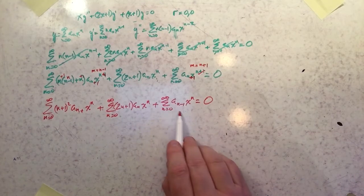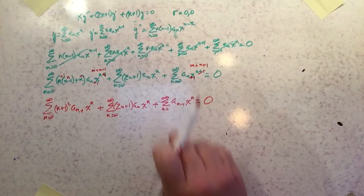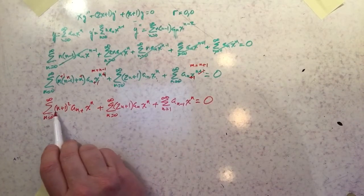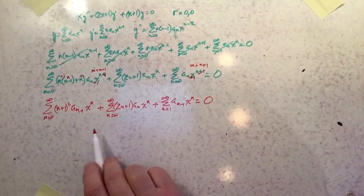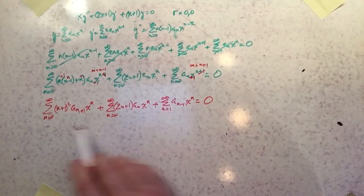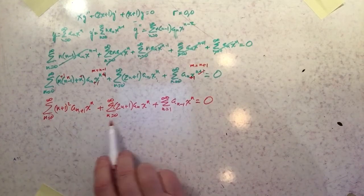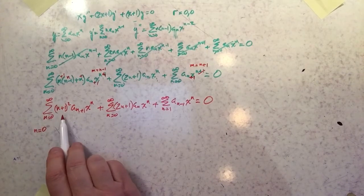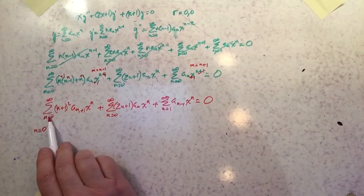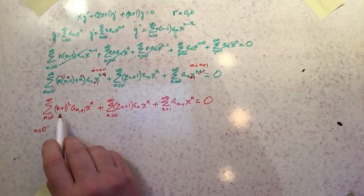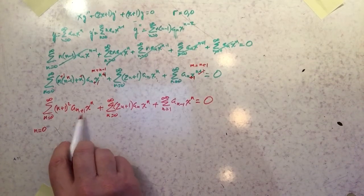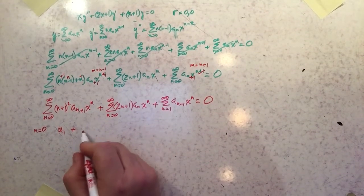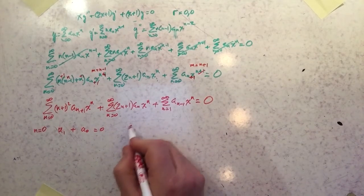The last series has a sub-index of n−1, so it can't start at zero — there's no such thing as a₋₁. So that series starts at n = 1, while the other two start at n = 0. At n = 0, only the first two series contribute: (1)²·a₁ + (1)·a₀ = 0, giving a₁ = −a₀.